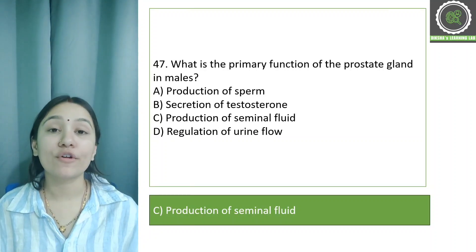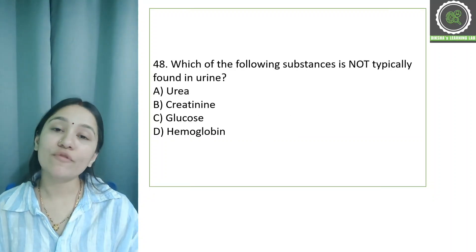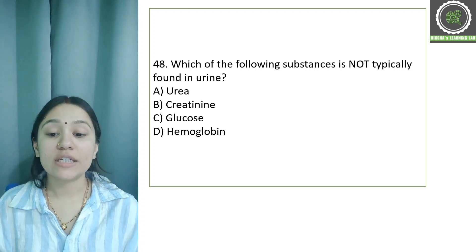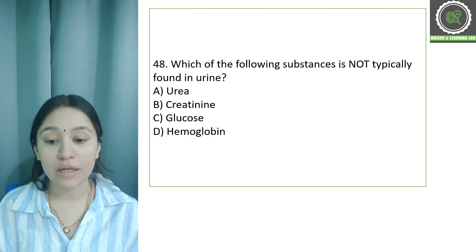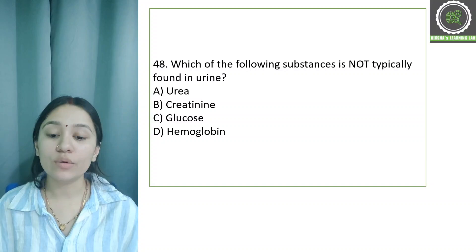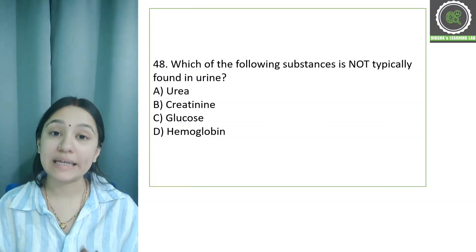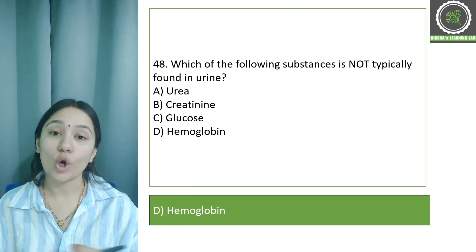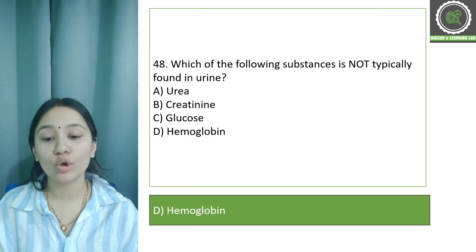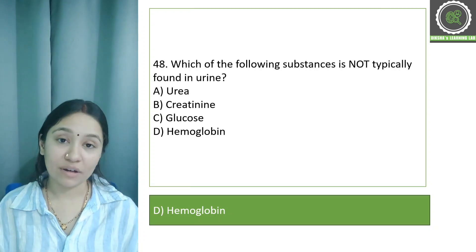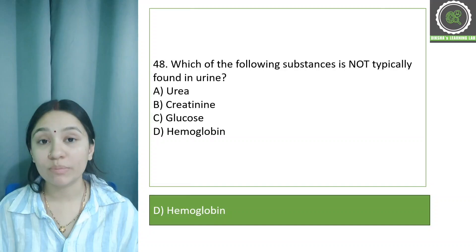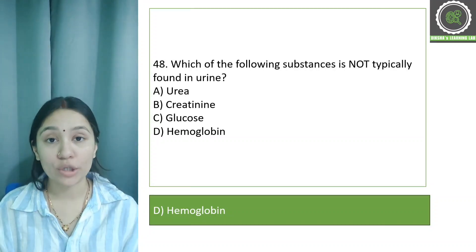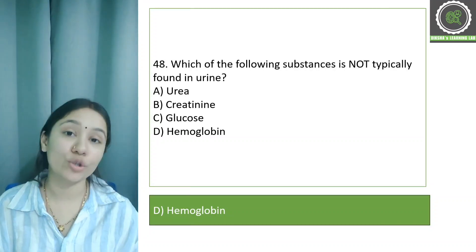Question number 48: Which of the following substances is not typically found in urine? Options: urea, creatinine, glucose, and hemoglobin. The correct answer is option D, hemoglobin. Hemoglobin is not typically found in urine — if it is present, it indicates a serious medical disorder that needs to be treated.